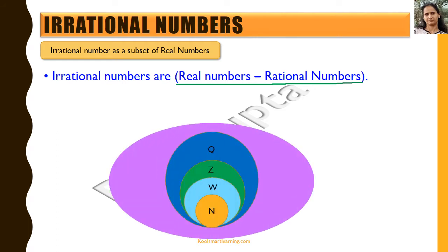Let's look at it diagrammatically. This complete figure is depicting the real numbers. As we have discussed in rational numbers, we have natural numbers as a part of real numbers. Then if we include 0, we get whole numbers. Then we include the negative numbers, and we get the integers. And then if we take numbers of the form p by q, we get the rational numbers — each one being a superset of the previous, so rational numbers is a superset of integers, whole numbers, and natural numbers.